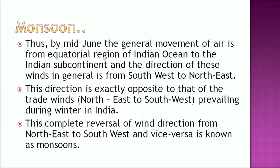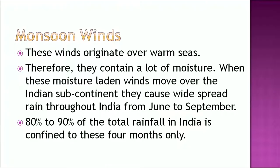By mid-June, the general movement of air is from the equatorial region of the Indian Ocean to the Indian subcontinent, and the direction of these winds is generally from south-west to north-east. This direction is exactly opposite to that of the trade winds, which blow from north-east to south-west during winter in India. This complete reversal of wind direction is known as monsoon. These winds originate over warm seas and therefore contain a lot of moisture. When these moisture-laden winds move over the Indian subcontinent, they cause widespread rain throughout India from June to September — 80 to 90 percent of India's total rainfall is confined to these four months only.